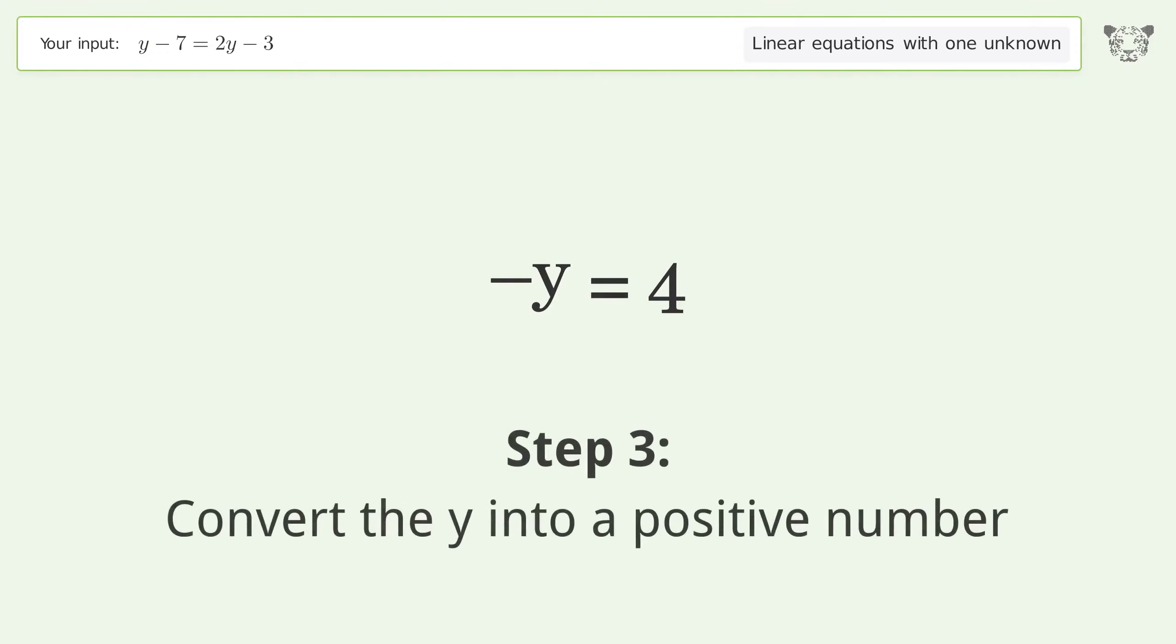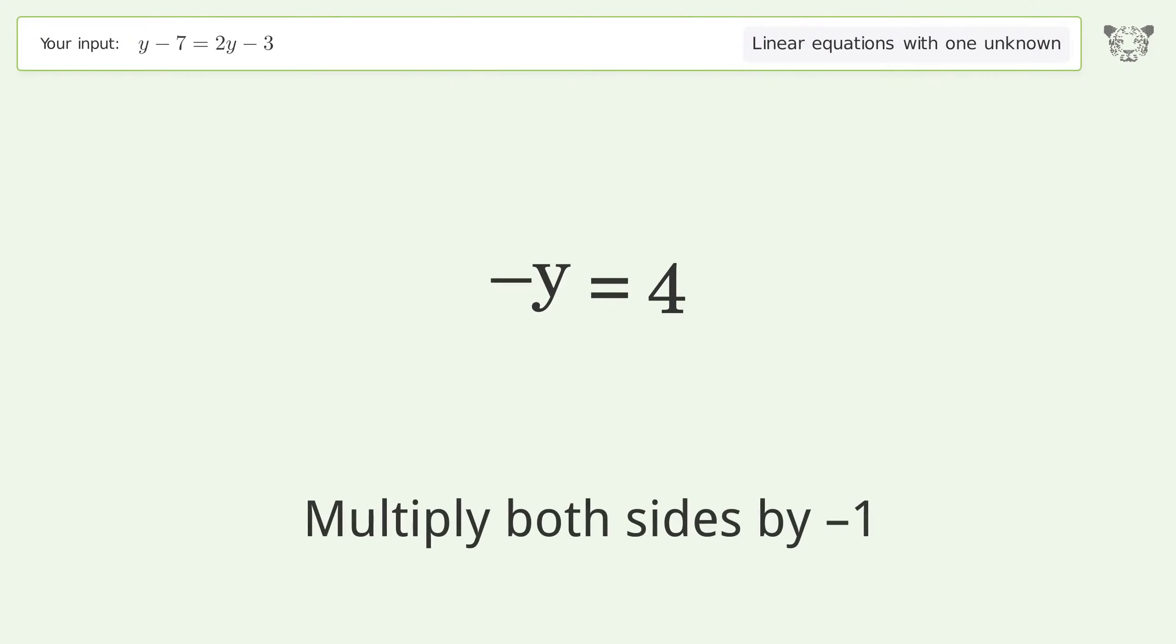Convert the y into a positive number. Multiply both sides by negative 1. Remove the 1s. Simplify the arithmetic.